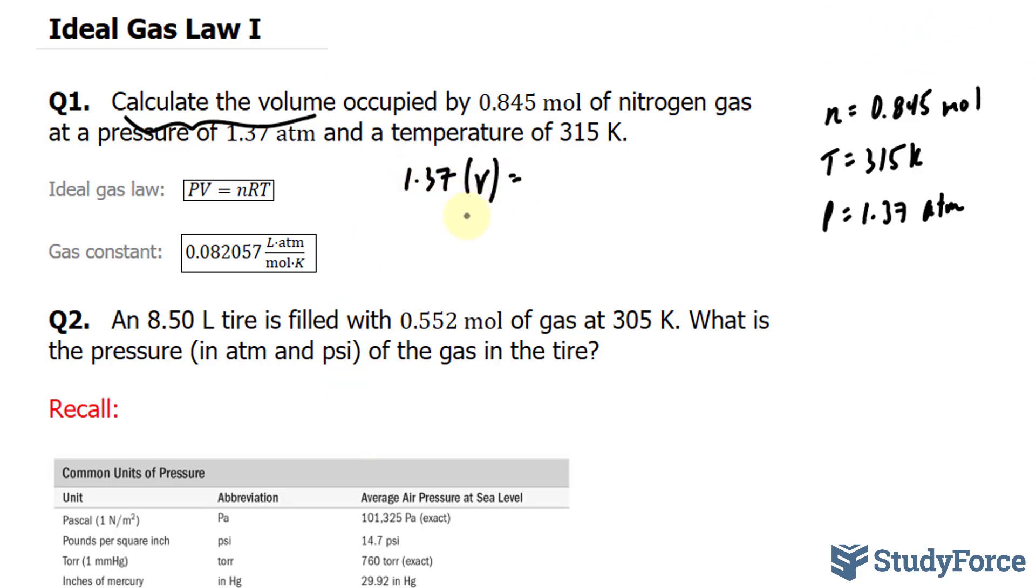So we're multiplying 1.37 by V is equal to n, the number of moles, 0.845. The gas constant is in atmospheres, moles, Kelvin, and liters. And that fits all the units that we're working with.